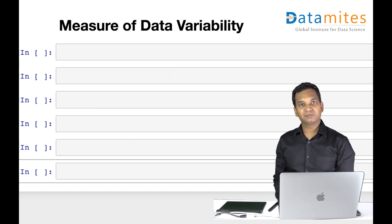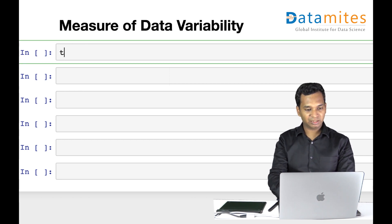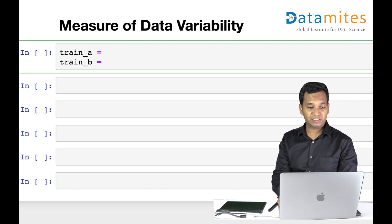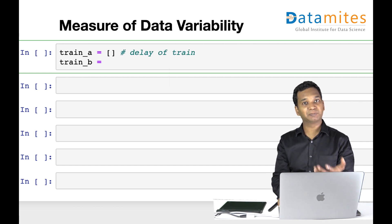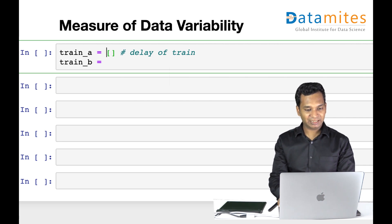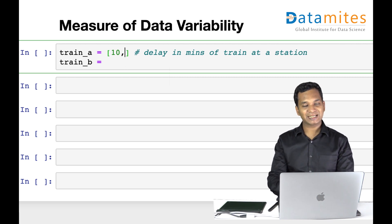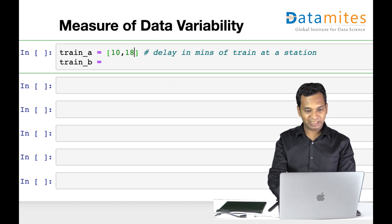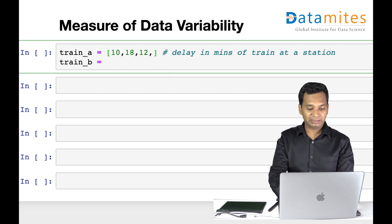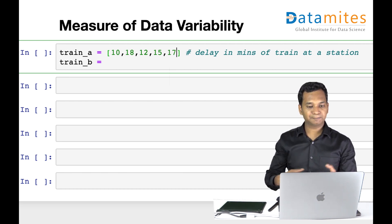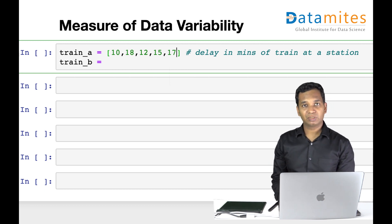Let's say we have two different trains — Train A and Train B. I'm measuring the delay of a train arriving at a particular station in minutes. Train A has delays of 10, 18, 12, 15, and 17 minutes on different days.